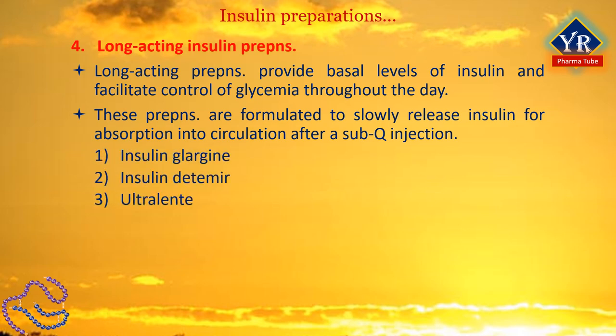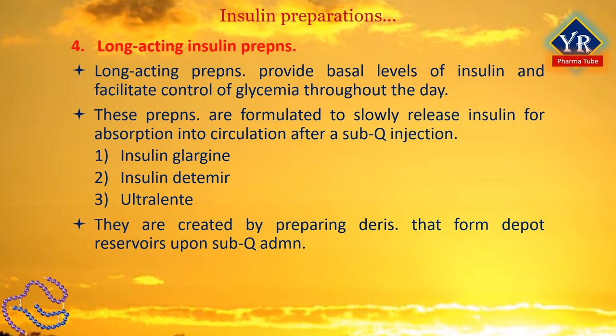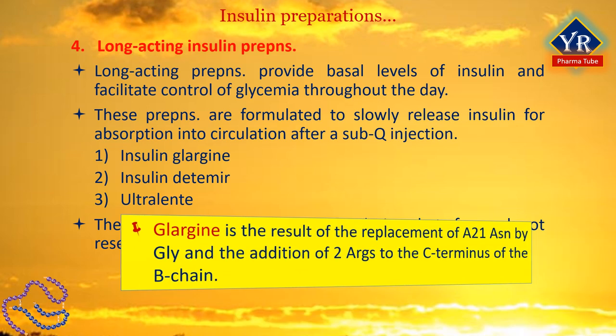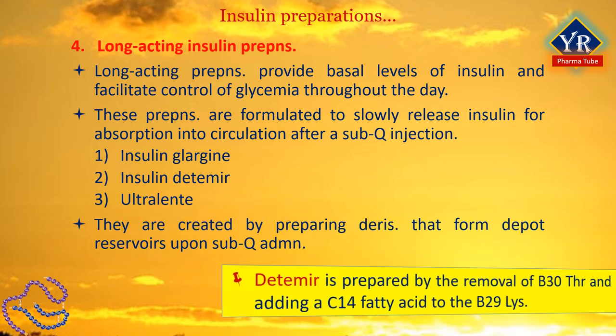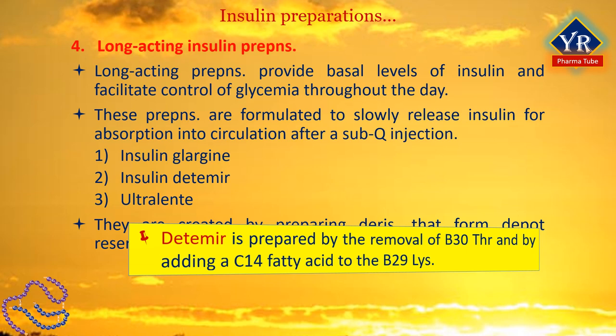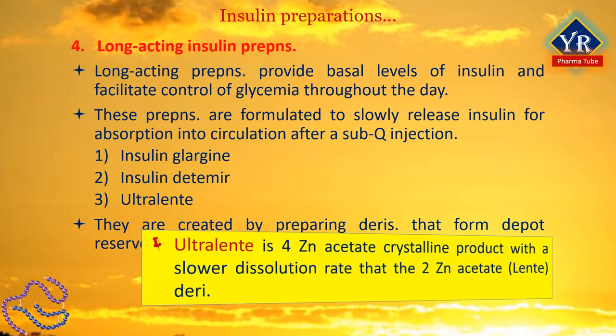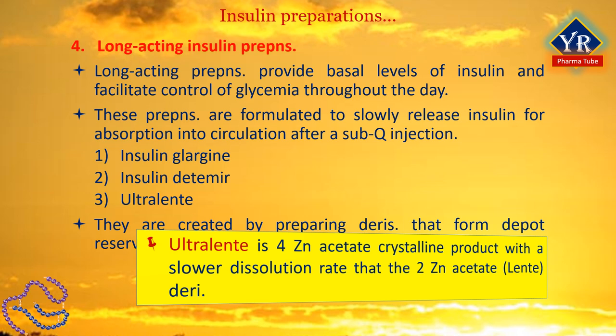Insulin glargine and insulin detemir are currently available and others are being developed. In comparison with NPH insulin, the long-acting insulins provide a slower and more prolonged absorption and duration of action with less of a peak effect. They are created by preparing derivatives that form depot reservoirs upon subcutaneous administration. Glargine is the result of the replacement of A21 asparagine by glycine and the addition of 2 arginines to the C terminus of the B chain. Detemir is prepared by the removal of B30 threonine and by adding a C14 fatty acid to the B29 glycine. Ultralente is a 4-zinc acetate crystalline product with a slower dissolution rate than the 2-zinc acetate derivative, that is the lente insulin preparation.